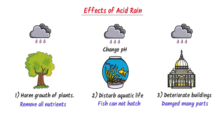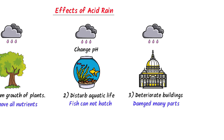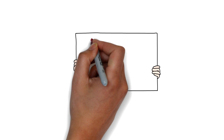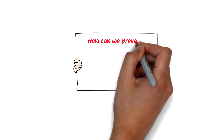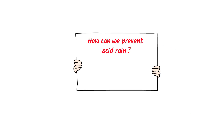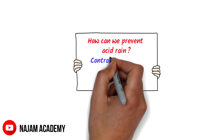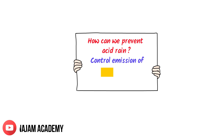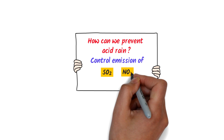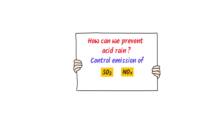These are some well-known effects of acid rain. Lastly, how can we prevent acid rain? The answer is simple: the only way to stop acid rain is to control the emission of sulfur dioxide and oxides of nitrogen into the air. By this way, we can prevent acid rain.